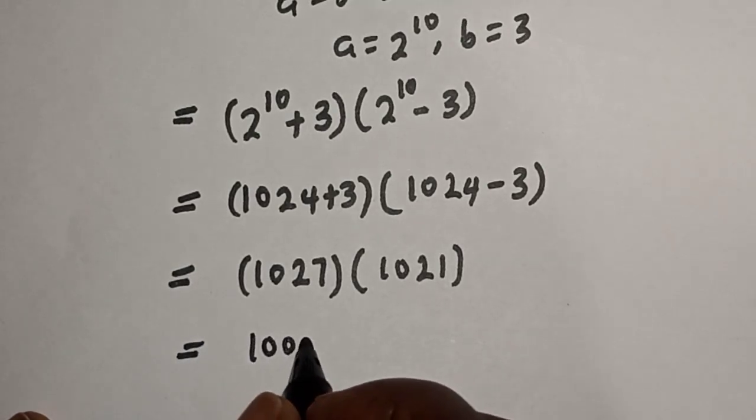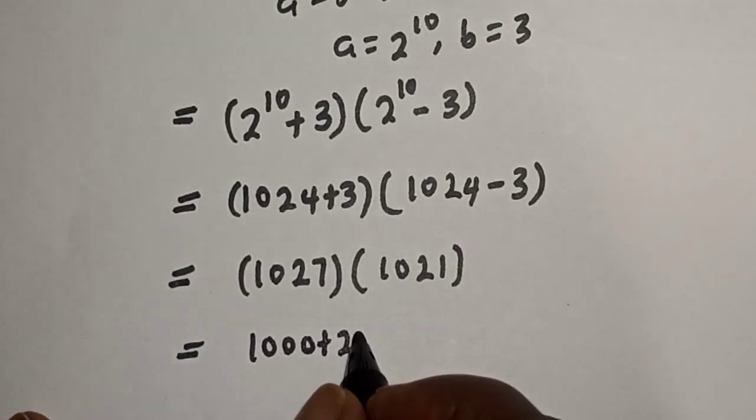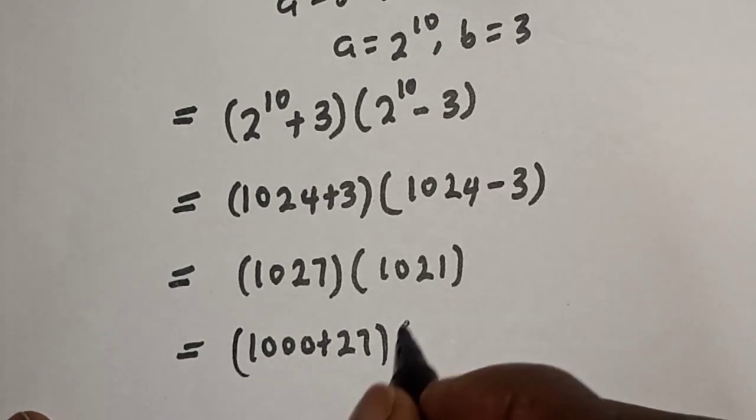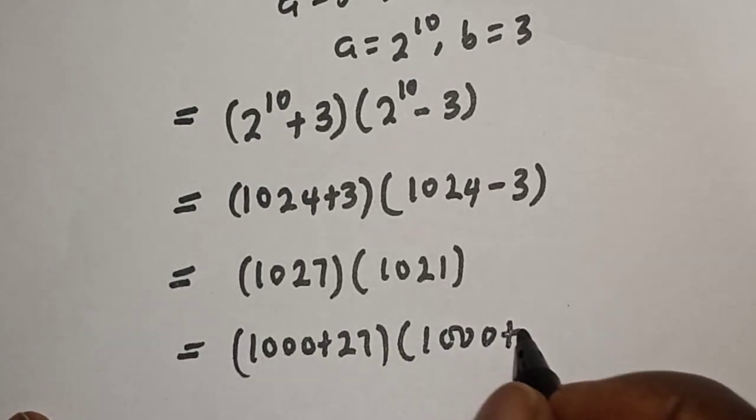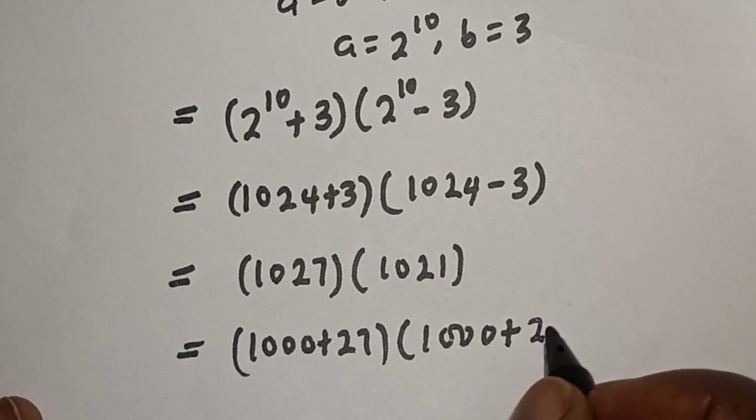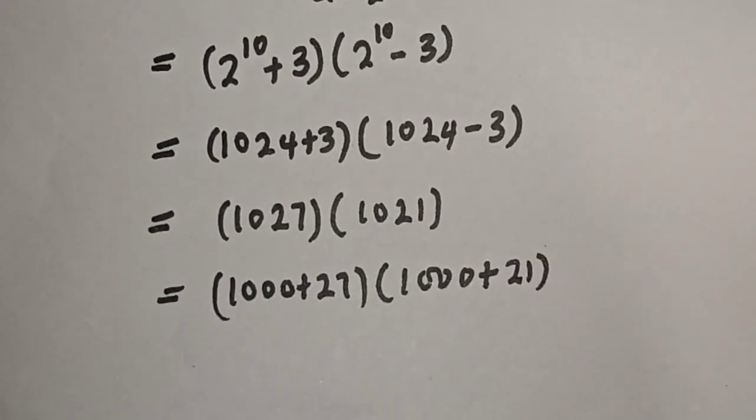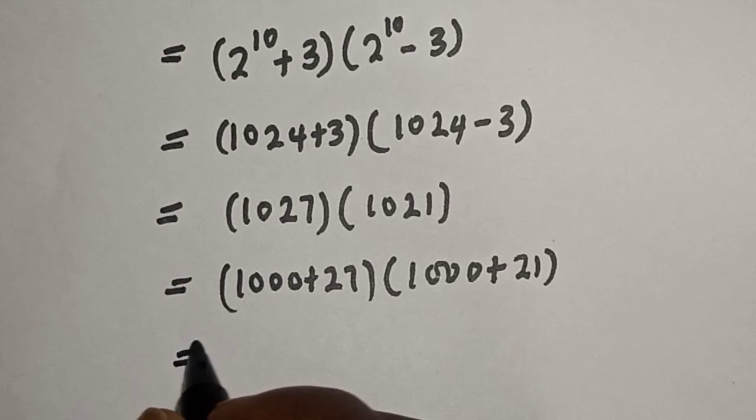This is the same as 1000 plus 27, multiplied by 1000 plus 21.